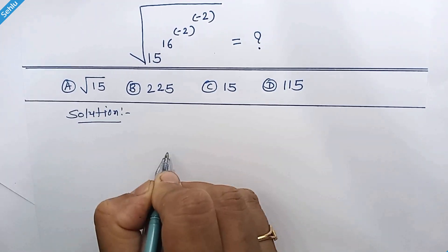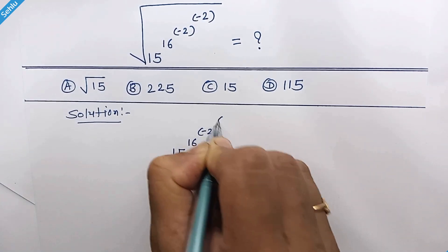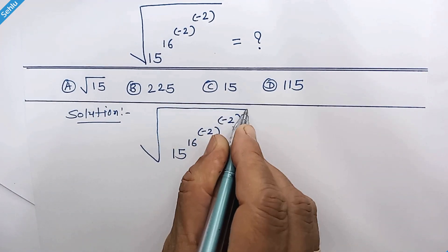Let me write the question first. 15 to the power 16 to the power negative 2 to the power negative 2. And all these things are under the square root.